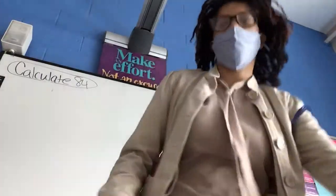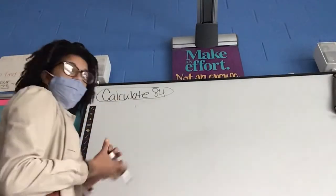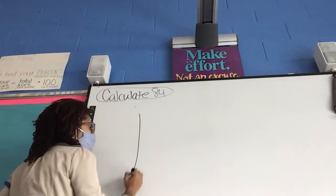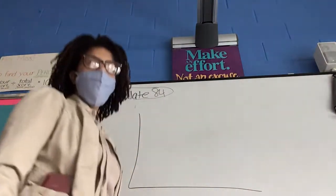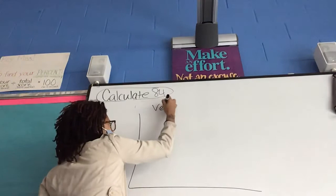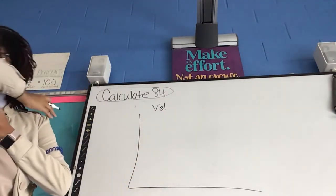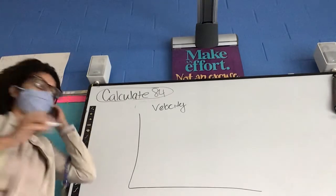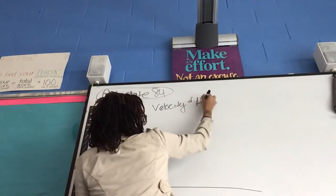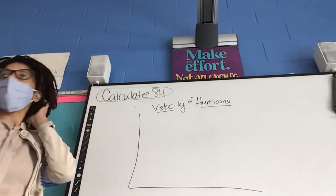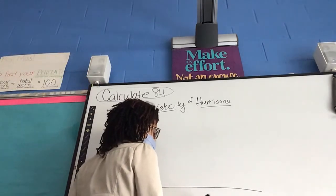All right. So for your project, the first part is there's a graph. And at the top of the graph, it says velocity. So this is velocity of a hurricane. At the bottom, it says time in seconds.